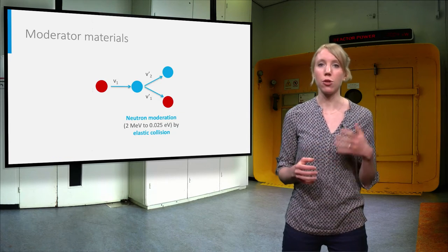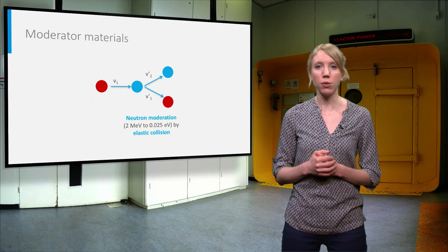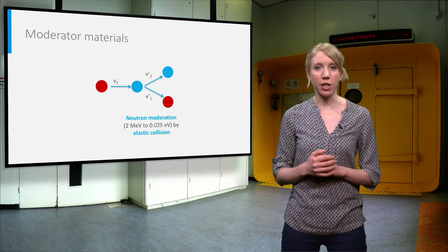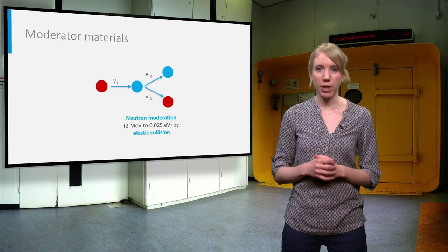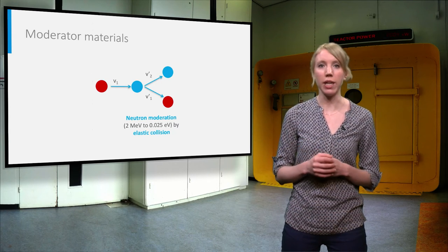The moderator is used to slow down the fast fission neutrons from their high kinetic energies of about 2 MeV to thermal energy ranges around 25 meV.